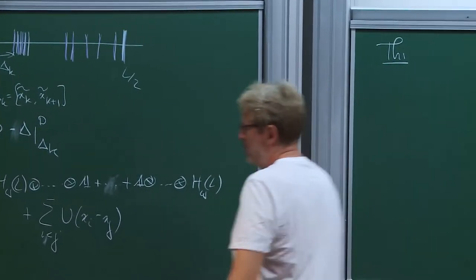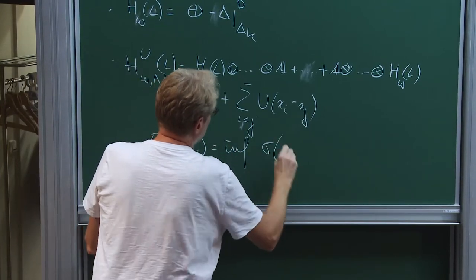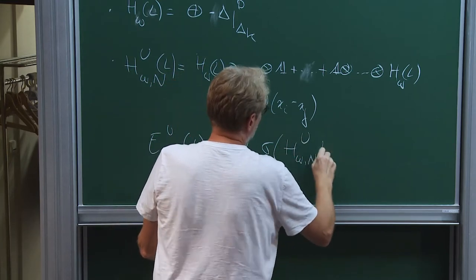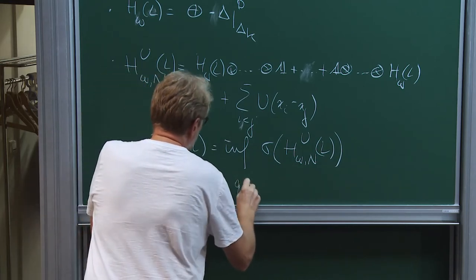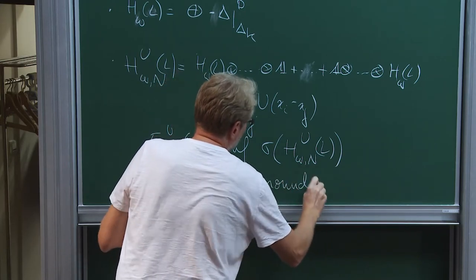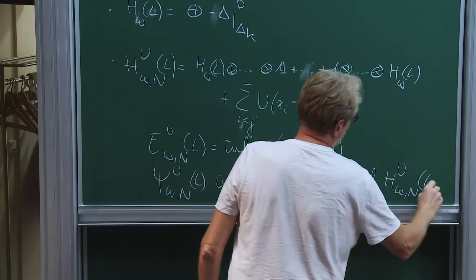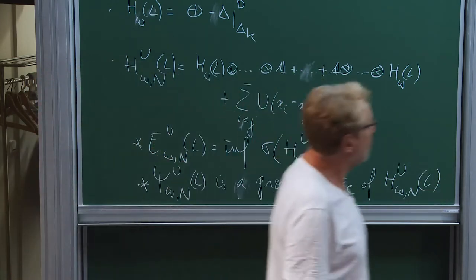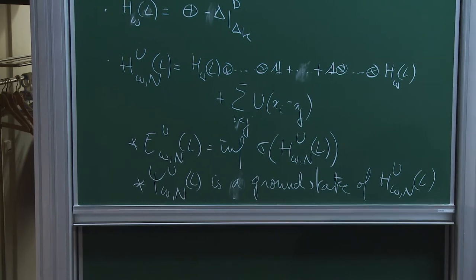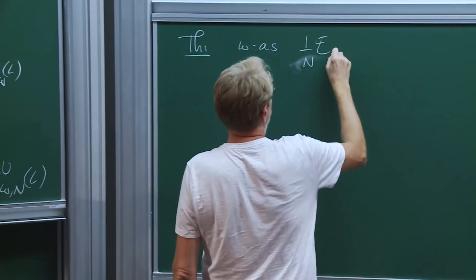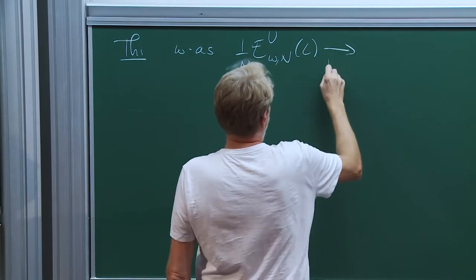Let me recall just one definition. E_{u, omega, n, u, L} is the ground state energy of this operator. And psi_{omega, n, L, u} is a ground state — any eigenvector associated to the eigenvalue E_{u, L, omega, n}. I stated yesterday that omega almost surely, if you take the energy per particle and the particle number is larger than capital N...